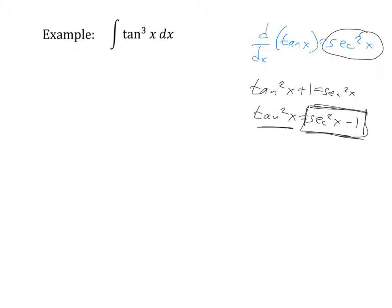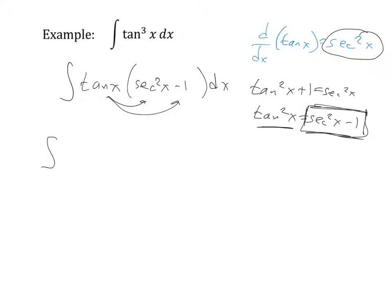My thought here is that we can rewrite this problem as the integral of tangent x times tangent squared x, but let's change that tangent squared into secant squared x minus one, dx. Now I've got more pieces to work with. We can distribute the tangent x through the problem: I'll have the integral of tangent x times secant squared x, minus tangent x, dx. This gives us the secant squared that we needed for u substitution, though that secant squared can't help with the second term — it's going to need to stand on its own.